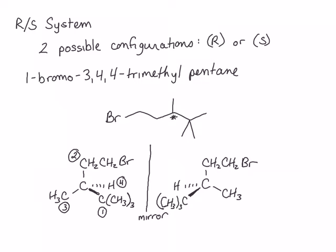We now need to point the lowest priority group — the hydrogen — away from us. Conveniently, it's been drawn so that the hydrogen is already pointing away from us. We look at the direction of rotation in order of priority from group one to group two to group three. This is a counterclockwise rotation, and that is given the designation S.